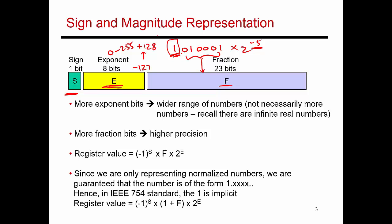So the total value in this 32-bit register is basically shown over here. Minus 1 to the power s. So if s is 1, it's a negative number. If s is 0, it's a positive number. Times 1, which is that implicit 1 over here, plus the value in this fraction field. That's these bits over here. And that sum multiplied by 2 to the power of whatever is in the exponent field.